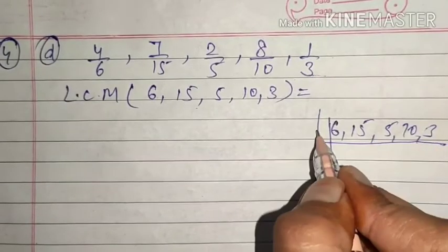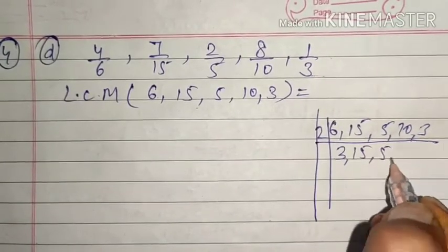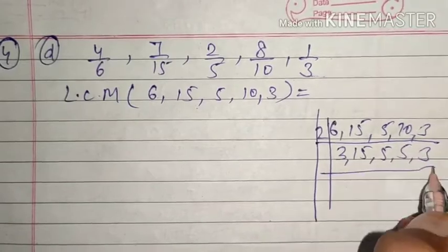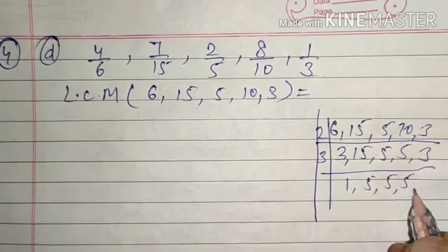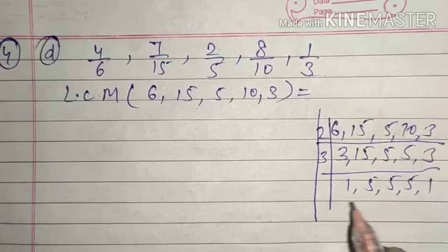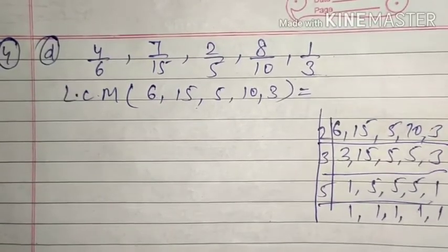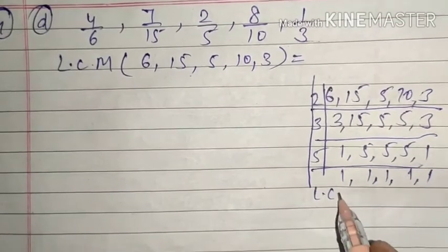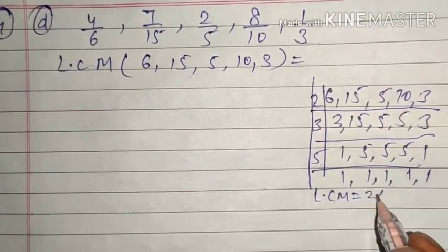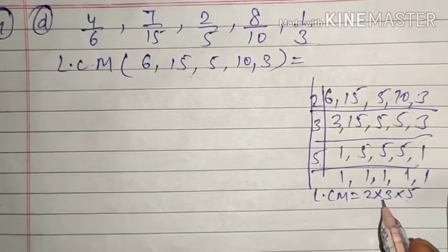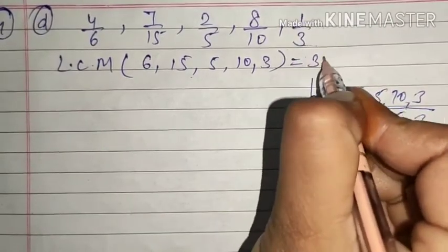Let me compute the LCM here as rough work. Dividing by 2: we get 3, 15, 5, 5, 3. Then dividing by 3: 1, 5, 5, 5, 1. Then dividing by 5: all become 1. So the LCM equals 2 into 3 into 5, which is 30. The LCM of all the denominators is 30.